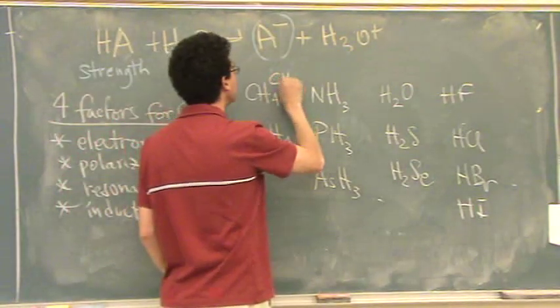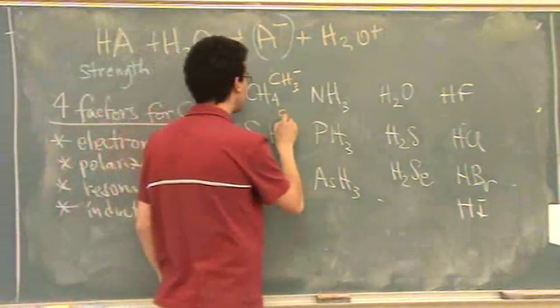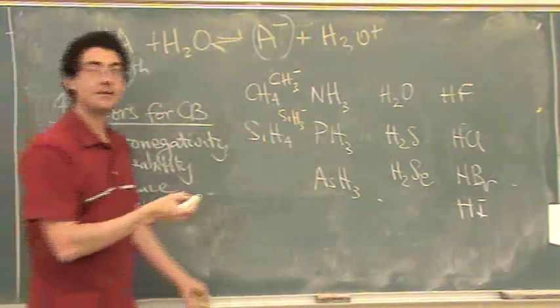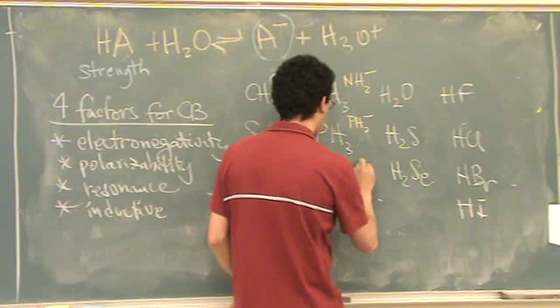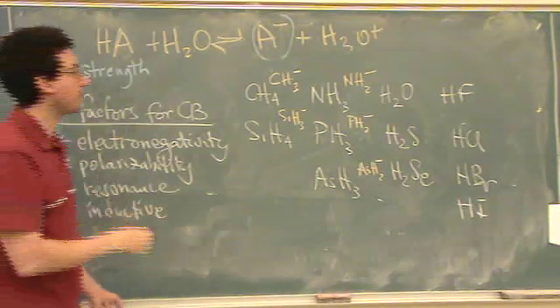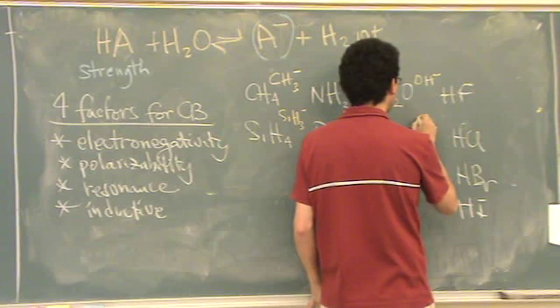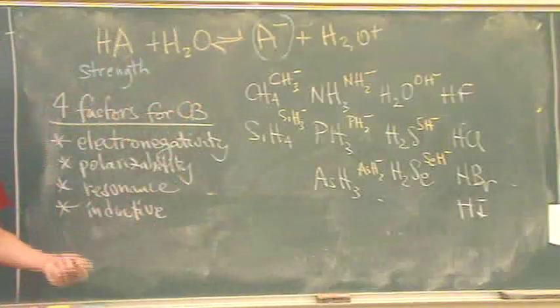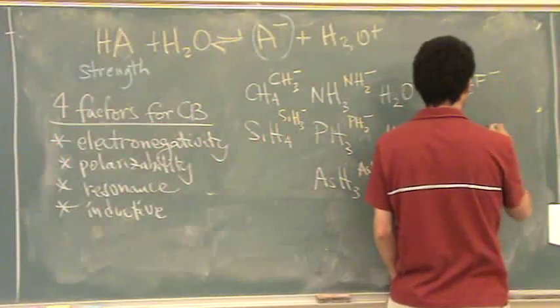If this loses the hydrogen, it's CH3 minus. If this loses the hydrogen, SiH3 minus. Same for the ammonia, if it loses the hydrogen, NH2 minus, PH2 minus, AsH2 minus. Now we'll go to water. If water loses the hydrogen, OH minus. H2S loses an H, SH minus, SeH minus. Notice I'm just taking one H off. Once you take an H off, it's the conjugate base. I'm drawing all the conjugate bases right now.